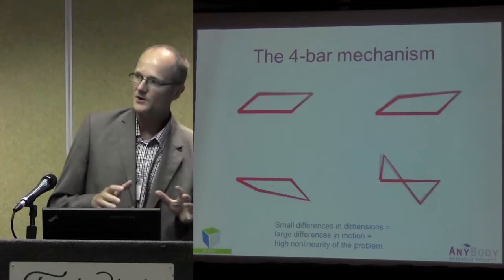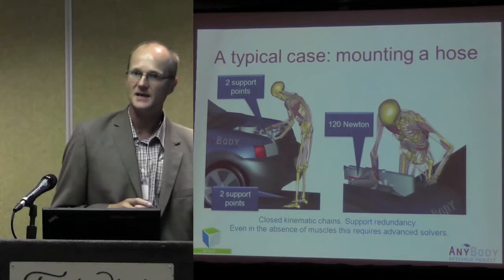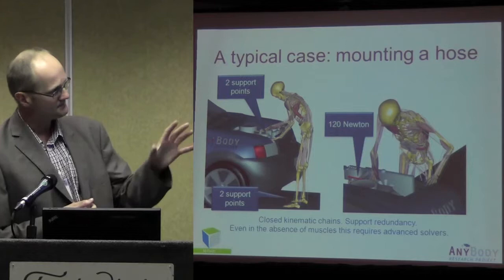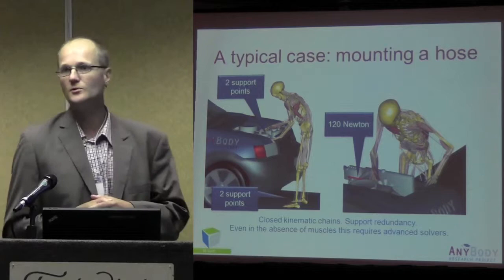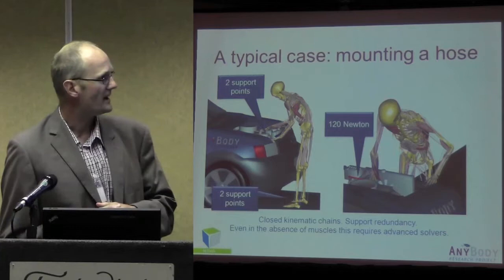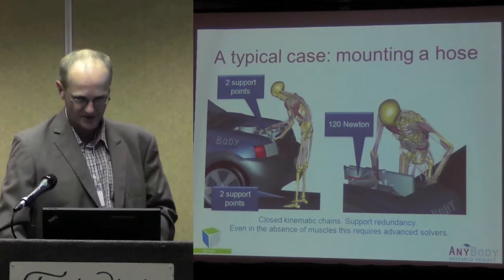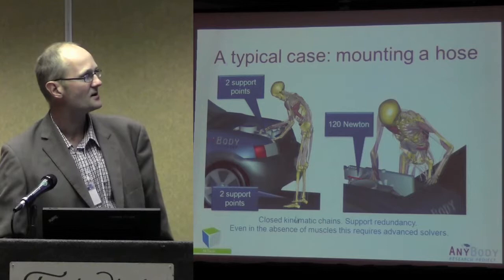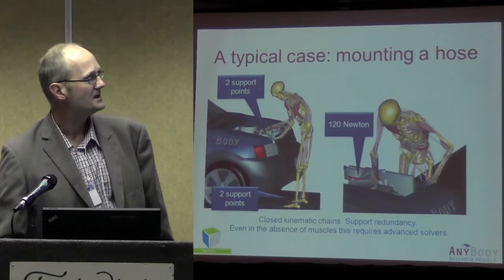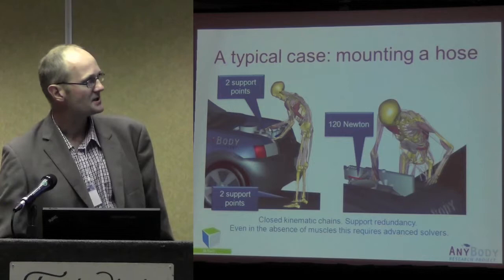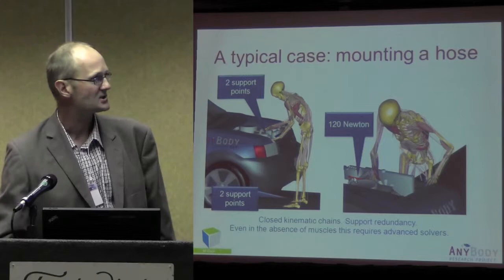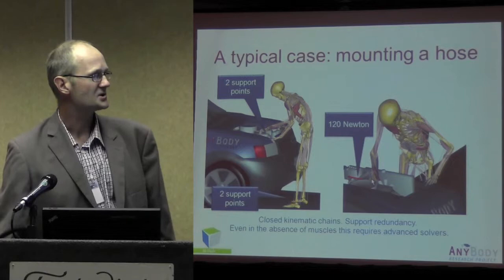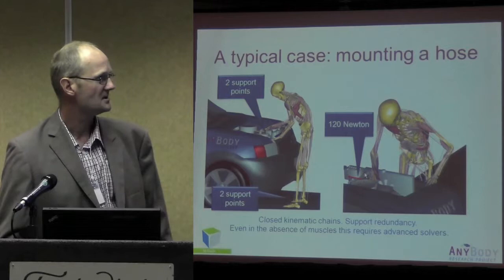So that's basically what I'm going to show you here, but with a static problem that has exactly the same property. This is a case of assembly line work — a typical case of mounting a hose somewhere in the engine compartment of a car. This mounting operation requires a certain force to be applied by the worker. We have a standing worker, and the worker is able to rest his hands on the edge of the engine compartment. With the right hand, he is applying a force to mount the hose. The force drawn here is what the hose is applying back on his hand — 120 Newtons in this case. It's not a small force, but also not a force that people normally cannot sustain.